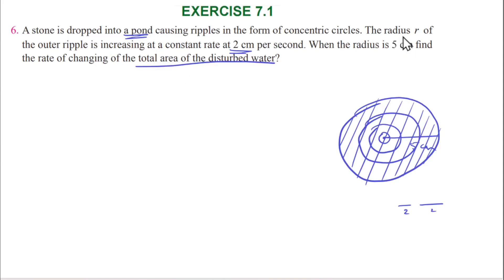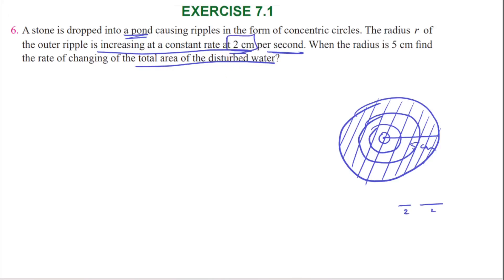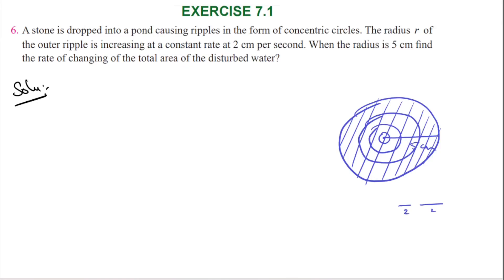The radius r of the outer ripple is increasing at a constant rate of 2 cm per second. So the rate of change of r with respect to time, dr/dt, is equal to 2 cm per second.